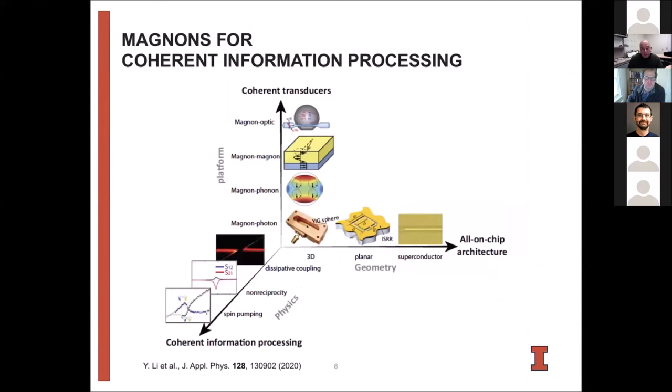So this is kind of reiterating the points that I made so far. One thing that are nice about magnons is that you can coherently couple them to microwave photons, to phonons, to other magnons, to optical excitations. At the same time, there's a lot of interesting physics that you can have, you can have different coupling mechanisms, you can have dissipative coupling, for example, like in spin pumping, you get non-reciprocal phenomena very easily, which is very interesting for especially some of these microwave circuitry. And you can have it in all kinds of different platforms. Lots of the initial work was done on 3D cavities. But as I show here, you can also use planar geometries, superconducting materials. So there's a wide variety of systems that you can couple to.